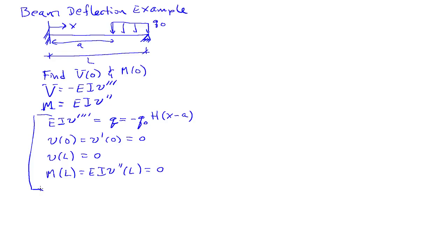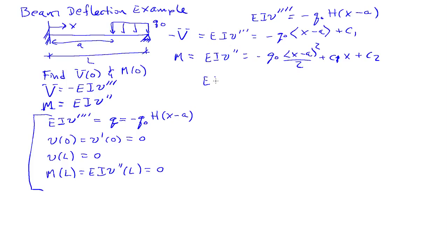And then after I've solved for that, then I can actually answer the questions at hand. So let's start by integrating. So EI four derivatives is equal to minus Q naught H of X minus A. And now I'm just going to have to integrate a number of times. So three derivatives minus Q naught, a Macaulay bracket X minus A, plus C1. Integrate again, minus Q naught X minus A squared over 2, C1 X plus C2. Note that this is minus V here, and this is the moment. I can integrate again.